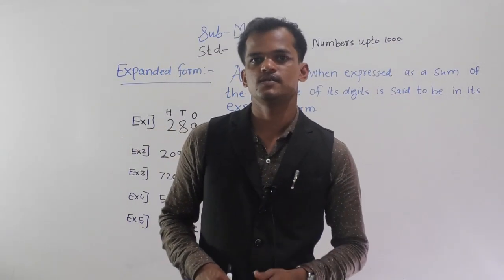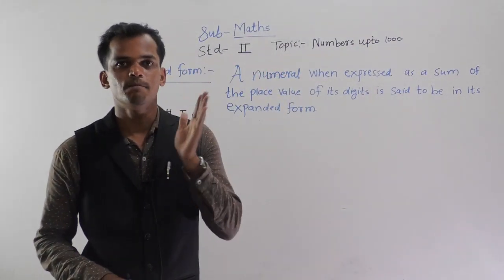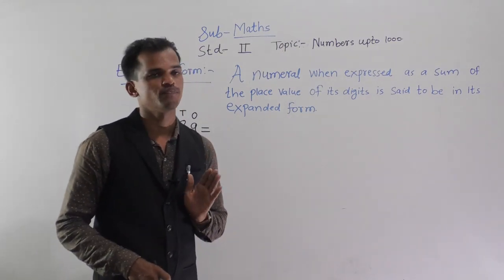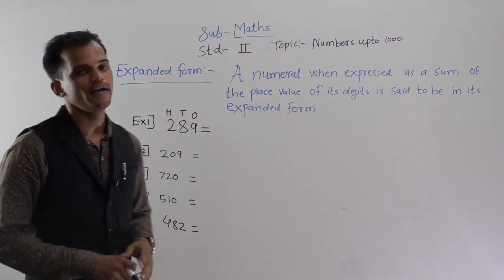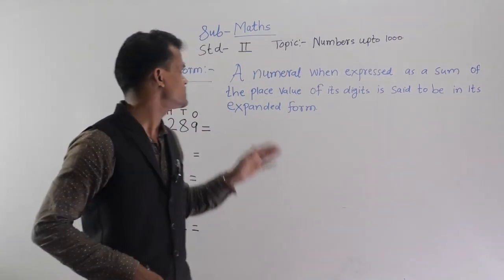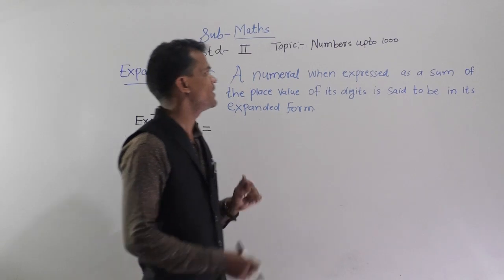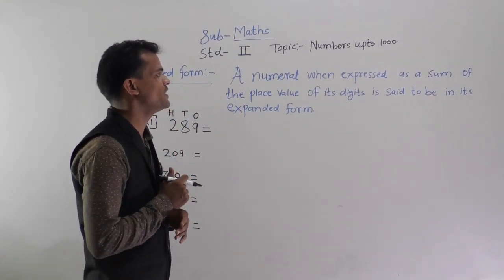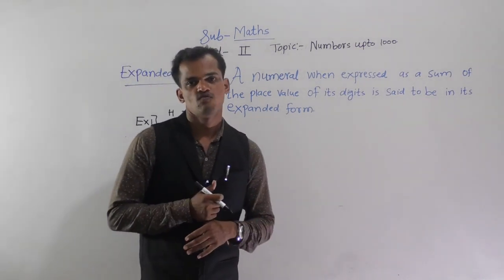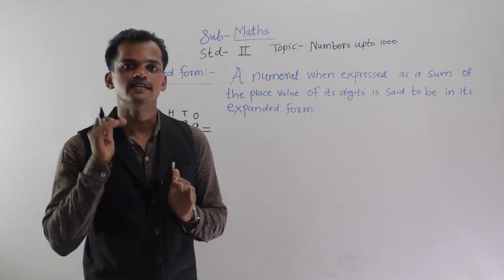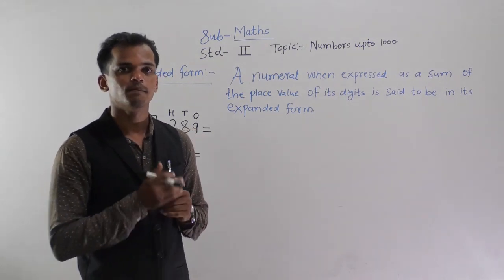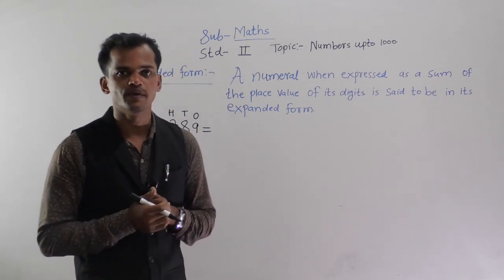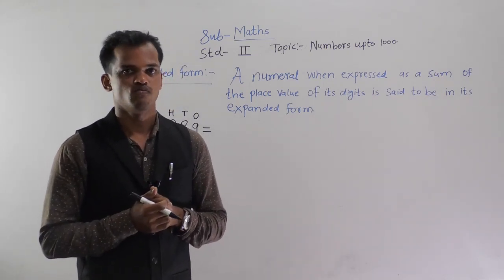Dear students, in the previous period we have seen the place values and face values. Today we are going to study the expanded form. What is meant by expanded form? A numeral, when expressed as a sum of the place values of its digits, is said to be in its expanded form.